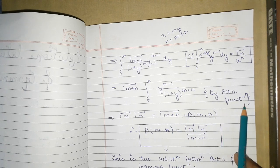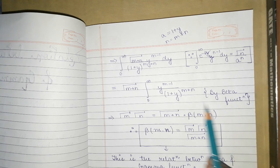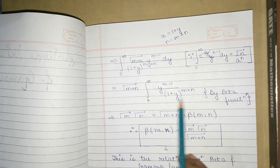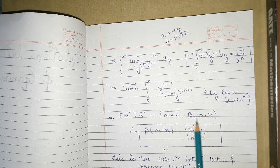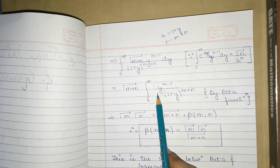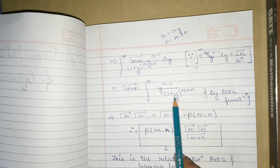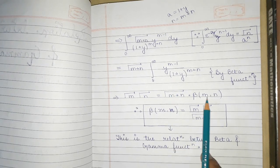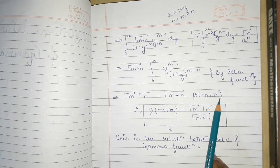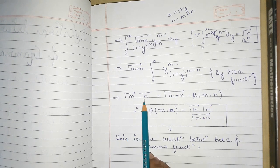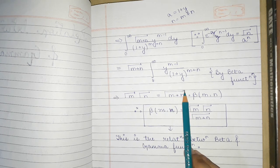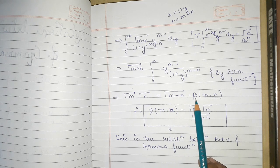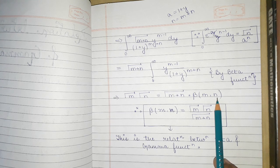From the definition of the Beta function, we know that the integral from 0 to infinity of y^(m-1) divided by (1+y)^(m+n) dy equals Beta(m,n). Substituting this value, we get: Gamma(m) times Gamma(n) = Gamma(m+n) times Beta(m,n).